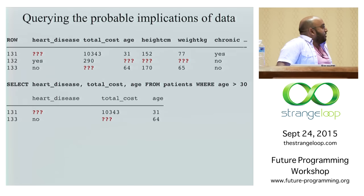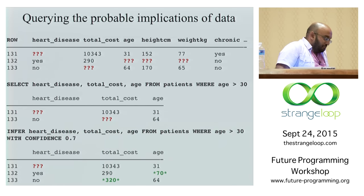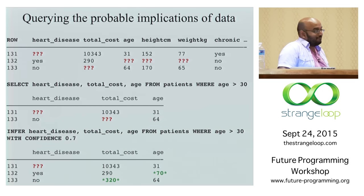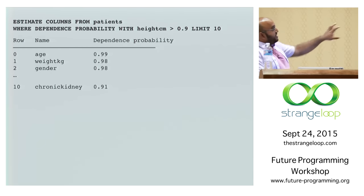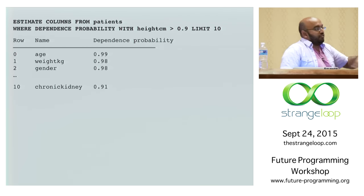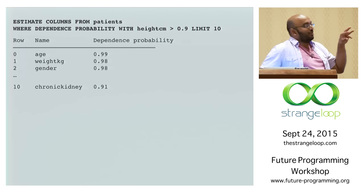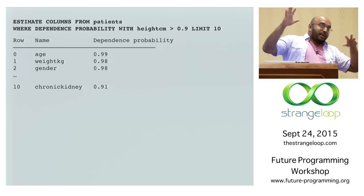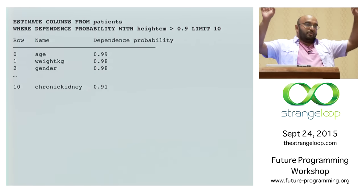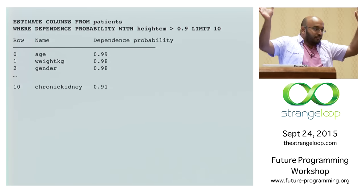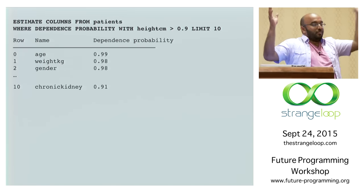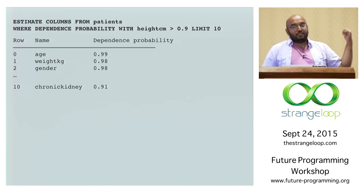You can think of INFER as the interface to predictive modeling as it's typically thought of. Another aspect of statistical inference is parameter estimation. The ESTIMATE query can be thought of as a linguistic interface to parameter estimation, where we're estimating whether two variables depend on one another — whether their mutual information is non-zero — and quantifying our uncertainty about that. So we're asking: what's the probability that there's a dependence?